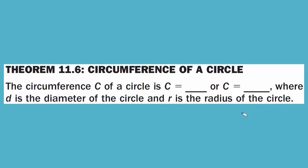Theorem 11.6, Circumference of a Circle: the circumference C of a circle is C equals pi times D, or C equals 2 pi R, where D is the diameter of the circle and R is the radius of the circle.